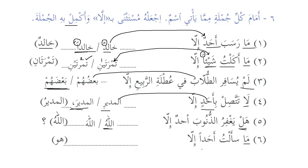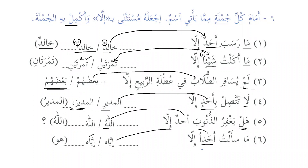'Ma sa'altu ahadan illa iyyaka' — I didn't ask anyone except you. 'Iyyaka' appears twice as answer: first as mansoob, and second as badal of 'ahadan.' Both possibilities give 'iyyaka' since ahadan is mansoob and iyyaka as badal is also mansoob.